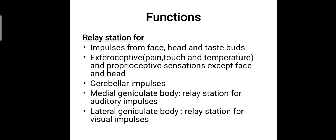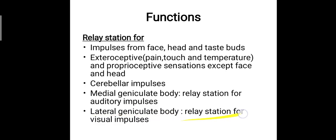The thalamus acts as a relay station for impulses from the face, head and taste buds. It also relays exteroceptive and proprioceptive sensations except from the face and head, as well as cerebellar impulses. The medial geniculate body acts as the relay station for auditory impulses, while the lateral geniculate body acts as a relay station for visual impulses.